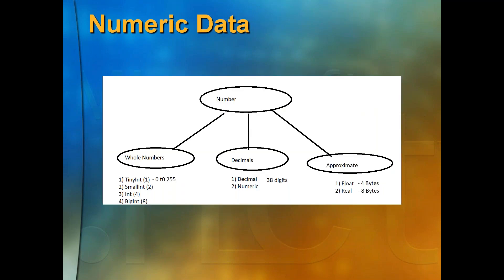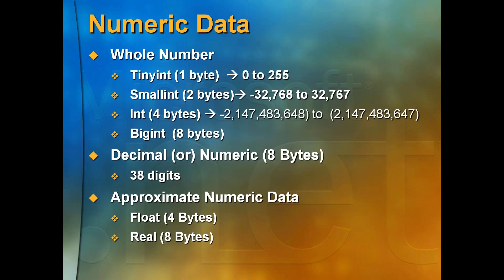Now, if you want to store numerical data, we have three categories: whole numbers (tinyint, smallint, int, bigint), decimals (decimal, numeric), and approximates (real, float). Whole numbers store data without decimals. tinyint is 1 byte, smallint is 2 bytes, int is 4 bytes, bigint is 8 bytes — you don't need to specify the size; the size is automatic.